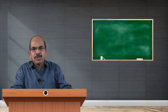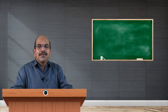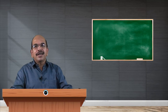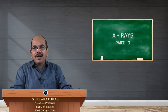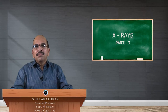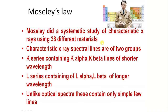Having understood about the production of characteristic x-rays, now let us see what are the different properties of these radiations and how they differ for different atoms. Moseley, the famous scientist, did a systematic study of these characteristic radiations using 38 different materials and he classified these radiations into two different groups.